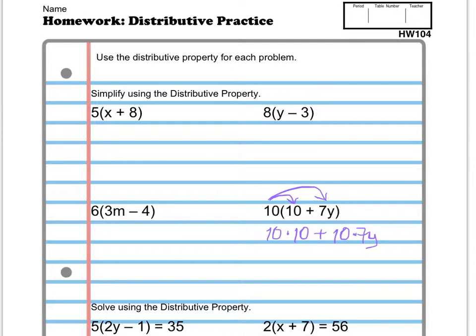Okay, that's supposed to be multiplication there. So 10 times 10 is 100 plus 10 times 7y. Well, that's basically just 10 times 7 times y. Okay, well, 10 times 7 is 70. And then I just leave the y there. So that's 70y.